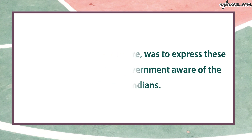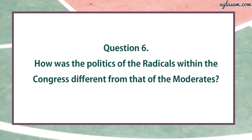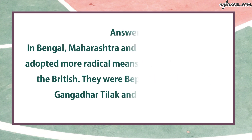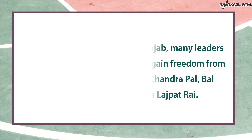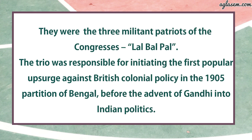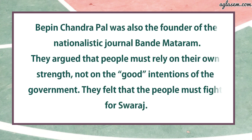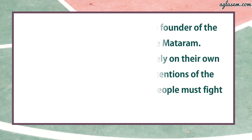Question number six: How was the politics of the radicals within the Congress different from that of the moderates? In Bengal, Maharashtra, and Punjab, many leaders adopted more radical means to gain freedom from the British. They were Bipin Chandra Pal, Bal Gangadhar Tilak, and Lala Lajpat Rai — the three militant patriots of the Congress. The trio was responsible for initiating the first popular upsurge against British colonial policy in the 1905 Partition of Bengal. Bipin Chandra Pal was also a founder of the nationalistic journal Vande Mataram. They argued that people must rely on their own strength, not on the good intentions of the government, and must fight for Swaraj.